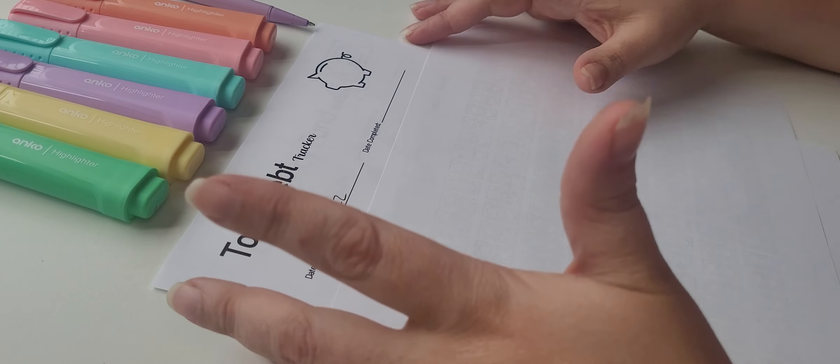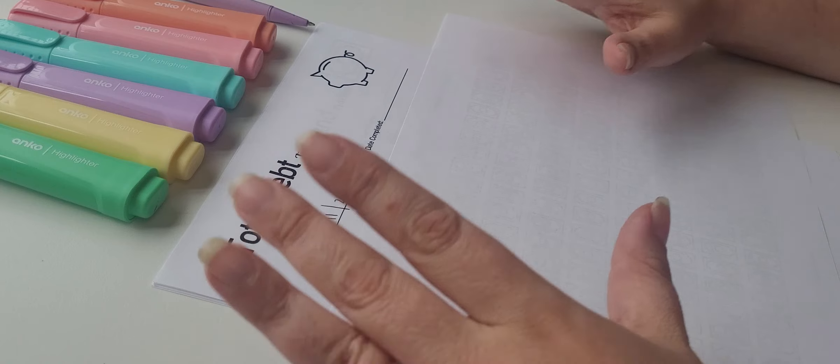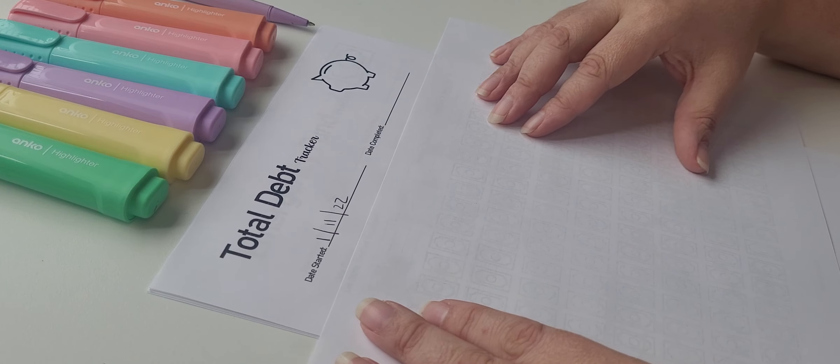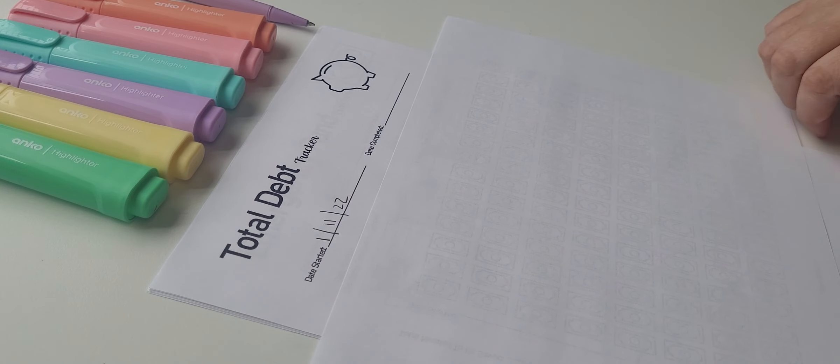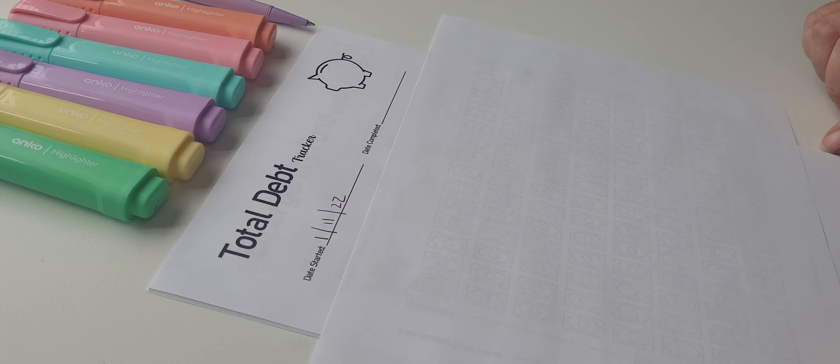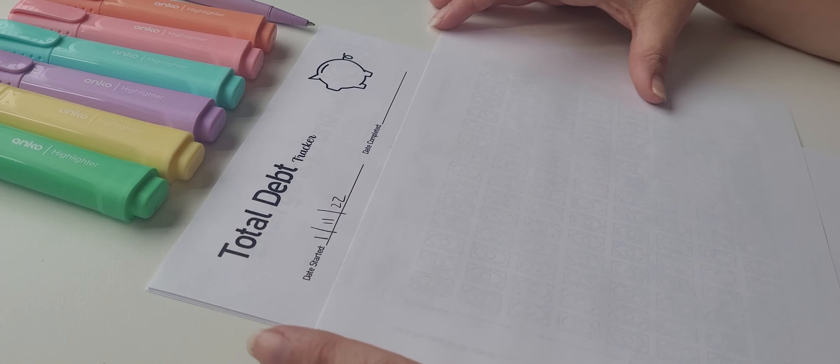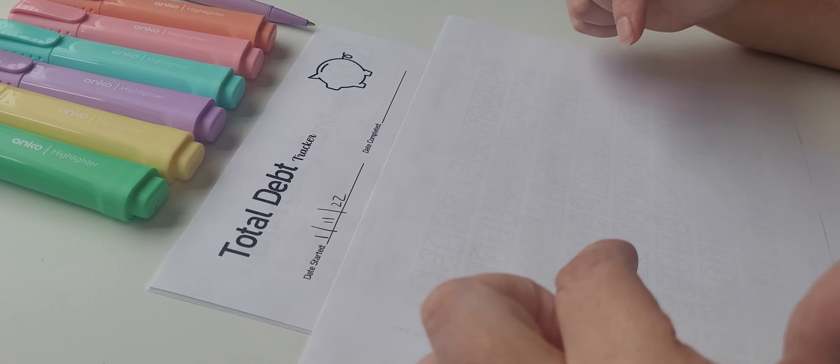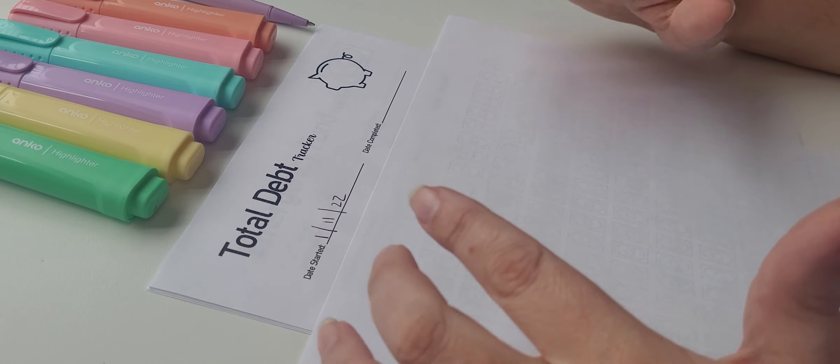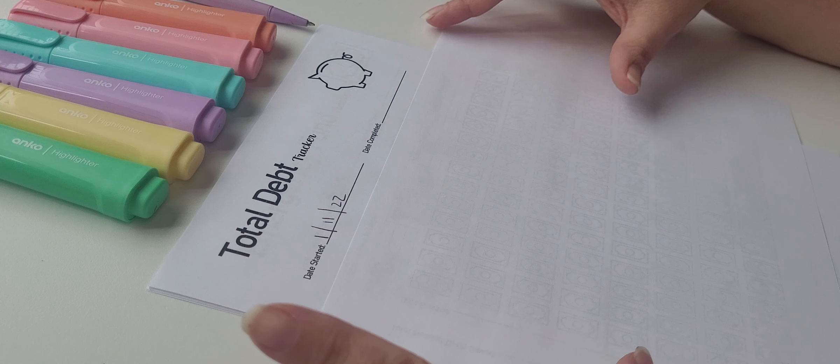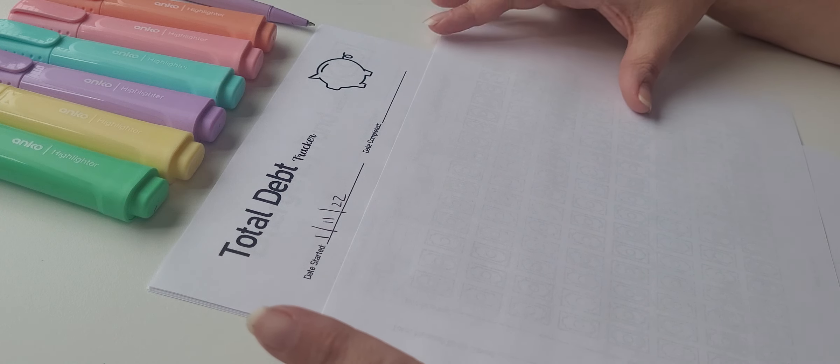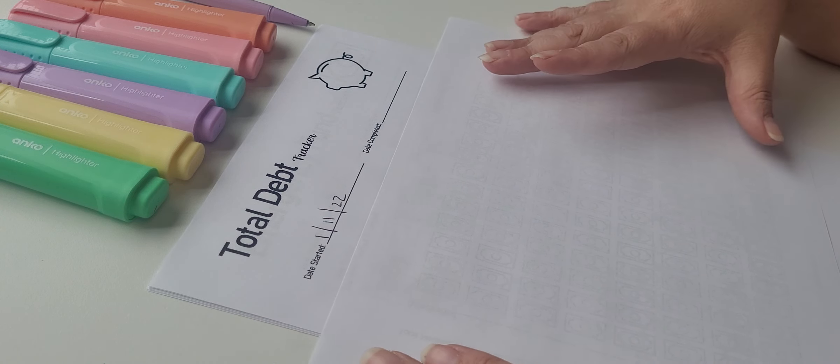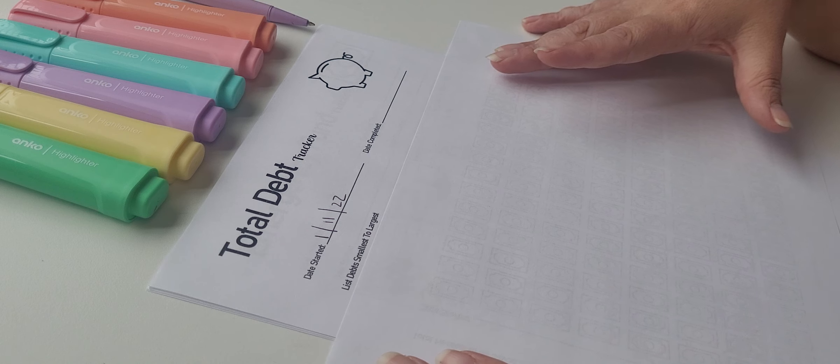And obviously our human babies are the most beautiful as well. I have to add that in there just in case. So yes, this is our starting point. I have made all of these trackers. I do have a little Etsy page with these on them. It is Kayla Budgets by Kayla.